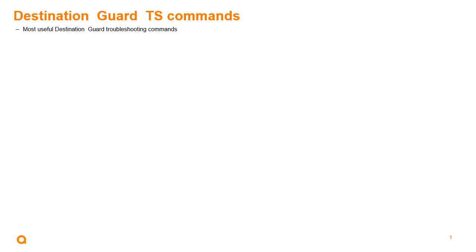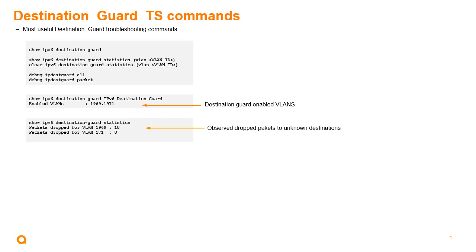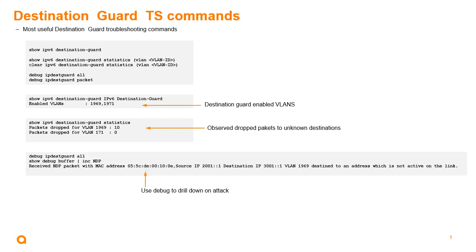Let's look at some Destination Guard troubleshooting commands. We have show commands around IPv6 Destination Guard, as well as some statistics and some debugs. With 'show IPv6 destination guard', we can see the VLANs that are configured for Destination Guard. Looking at IPv6 Destination Guard statistics, we can see the VLANs that have received unknown destinations, as well as the number of packets being dropped to those destinations. Finally, with the debug, we can look at the buffer and drill down on specific reasons, examining what's been dropped and on which VLANs.